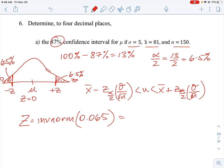So for the 6.5%, our Z score is going to be negative 1.5141. So that's the lower band for that negative Z value there.